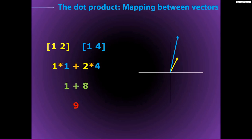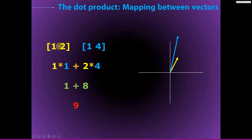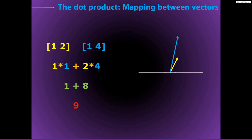Just as a quick reminder: the dot product is a mapping between two vectors. It allows us to get a single scalar number that reflects the relationship between a pair of vectors that have the same number of elements. The dot product is computed by point-wise multiplying the elements of the two vectors and then summing the resulting products together. If this seems unclear, you should go back and watch the previous lecture on computing dot products.